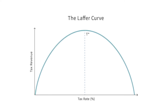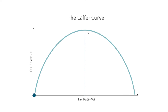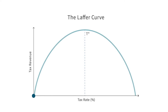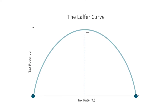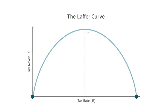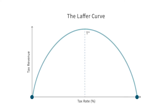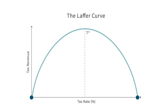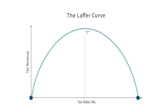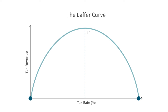When the tax rate was zero, a government wouldn't raise any revenue since it wasn't taxing anything. If the tax rate were 100%, again, the government wouldn't raise any revenue, since people won't work or invest if they know government will take everything they earn — or at least if they do, they won't tell the government about it. At some point in the middle, there's a sweet spot: a tax rate that would maximize government revenue.